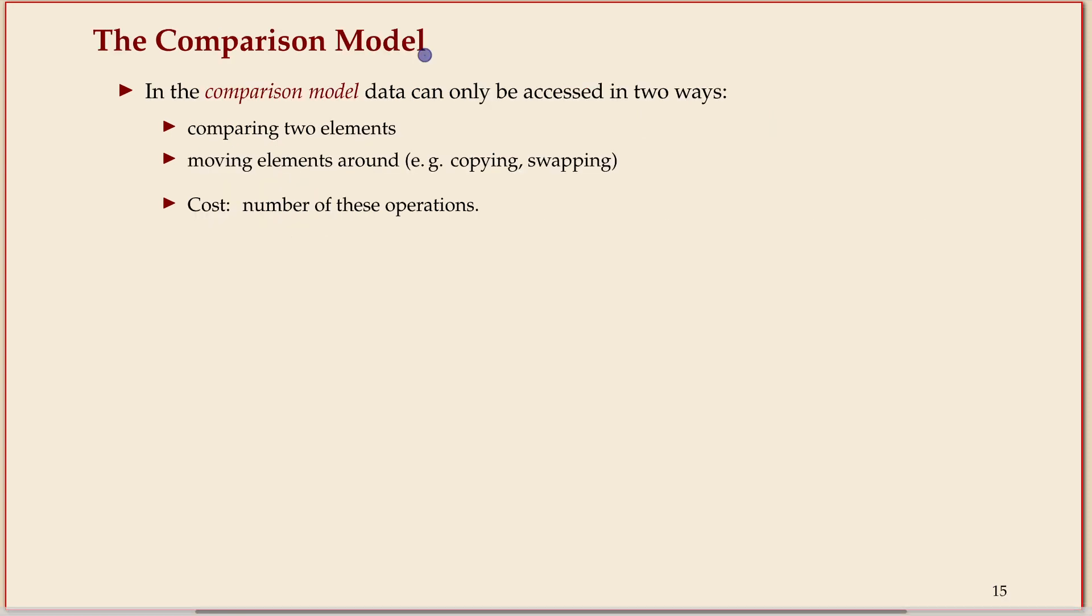What we'll use is the comparison model, which is a standard model also outside of this specific use case. This model says I'm abstracting very much away from computers. What they actually do is I only count when they compare two objects, but that's also the only thing they can do. So I can take two objects in an array, I can compare them and I'll tell you which one's smaller, and you can move elements around.